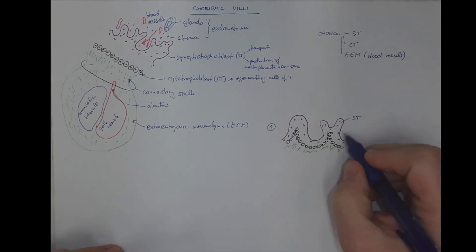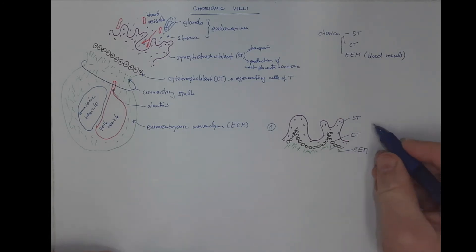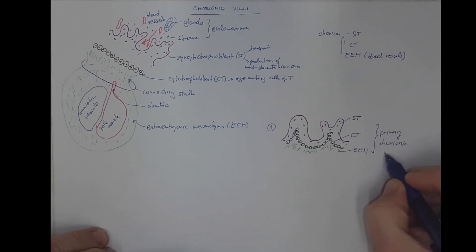So we got syncytiotrophoblast, cytotrophoblast, and extra embryonic mesenchyma. This developmental stage, as a transient stage, is called primary chorionic villi.